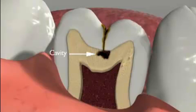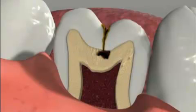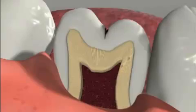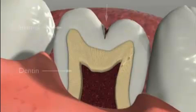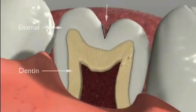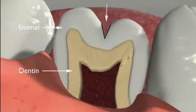Over the years, many attempts to stop pit and fissure tooth decay have been made. Here are the most common, their strengths and weaknesses. Fissurotomy, or prophylactic odontotomy, involves funneling the grooves open with a cone-shaped dental burr.